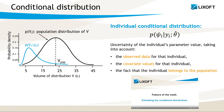Estimation of the individual parameters is related to the conditional distribution. It represents the uncertainty of the individual parameter values, taking into account observed data, covariates and population parameters. This distribution cannot be computed in a closed form, but we can sample it using Markov chain Monte Carlo methods.